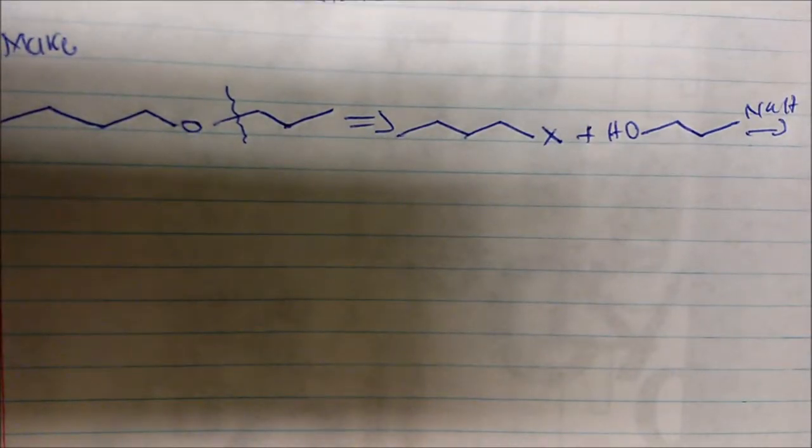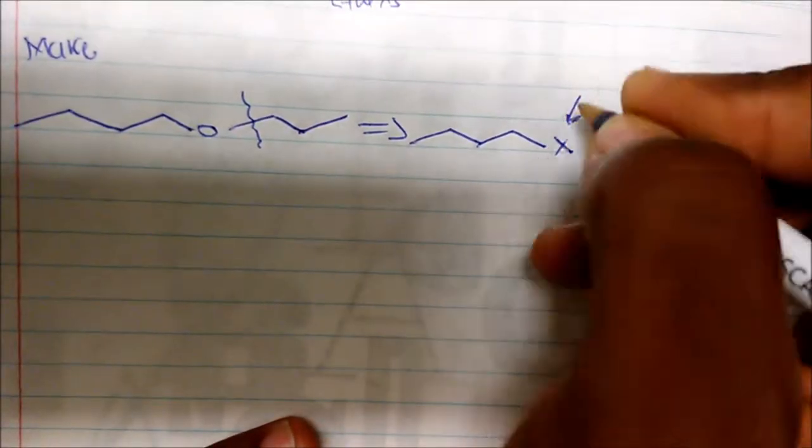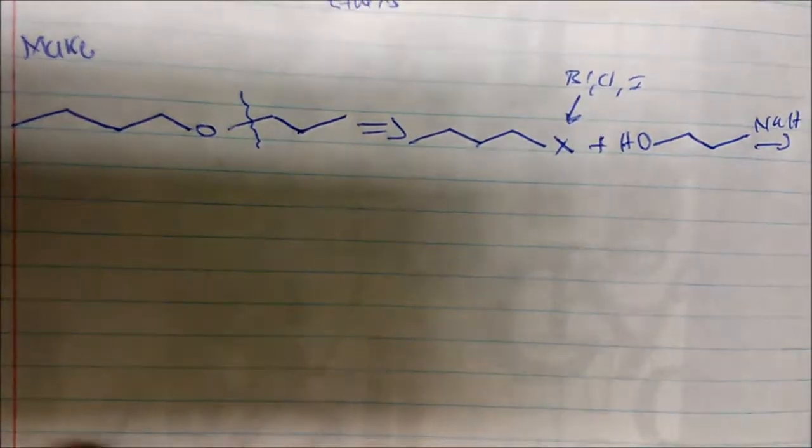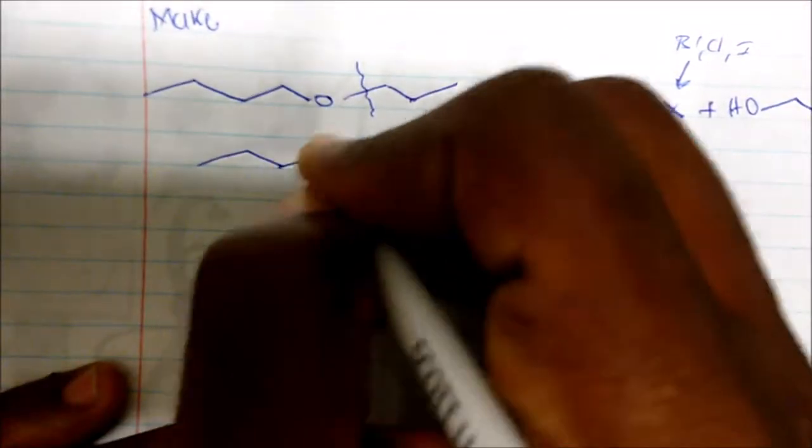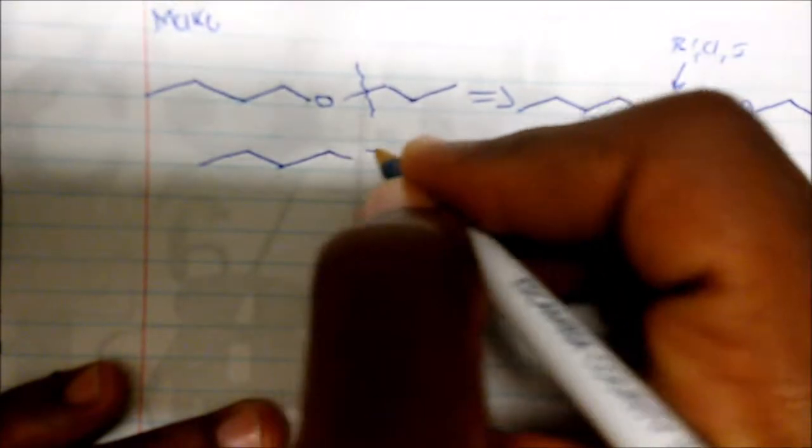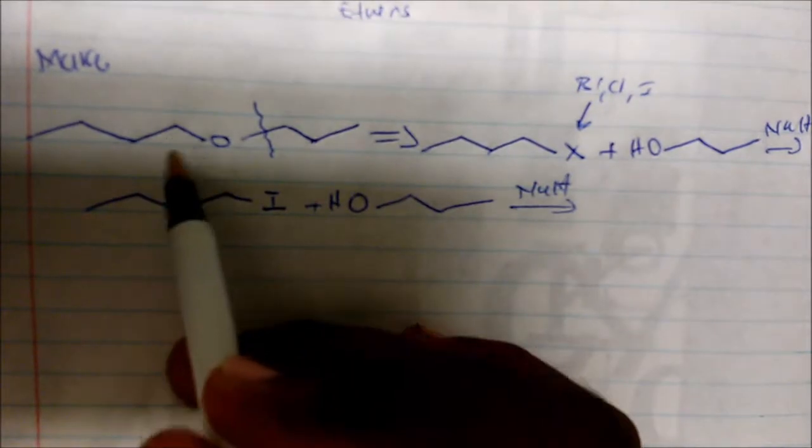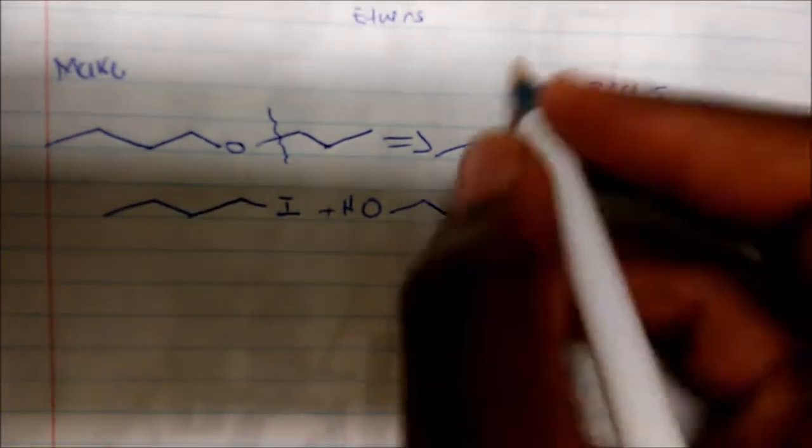Now X is an alkyl halide, so this may be bromine or chlorine or even iodine, it doesn't matter. Putting everything into perspective, we could take this plus this material here and sodium hydride and we synthesize to get this molecule here.